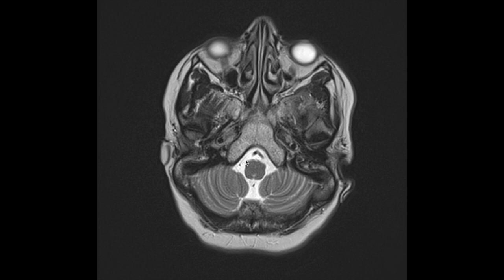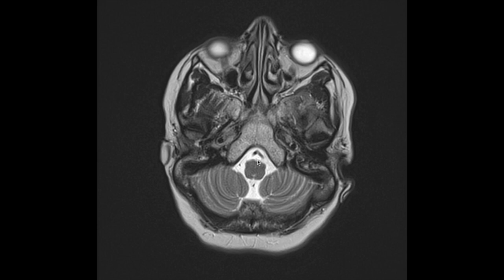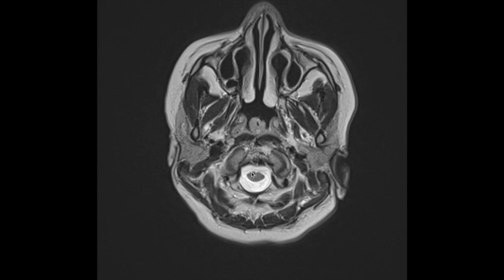Coming down further still, we have the medulla oblongata, which is continuous with the spinal cord. We've briefly touched upon the venous sinus anatomy.